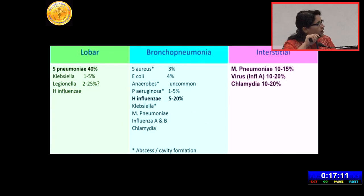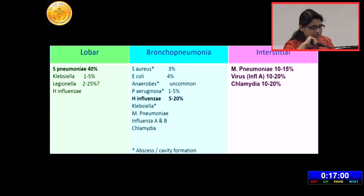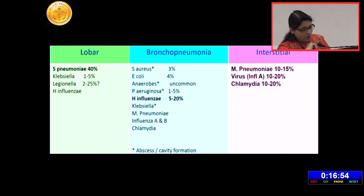There is a preponderance for particular microorganisms to present in a particular pattern: strep pneumoniae, Klebsiella, or Legionella usually present in a lobar pattern. Bronchopneumonia is usually caused by Staph aureus or Haemophilus influenzae. Interstitial pneumonia is caused by viral or Mycoplasma infections.